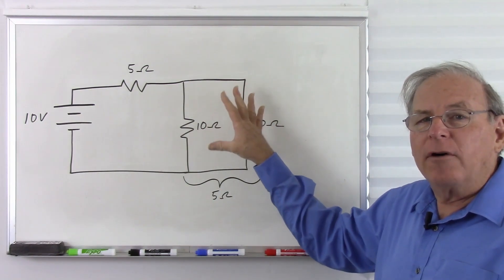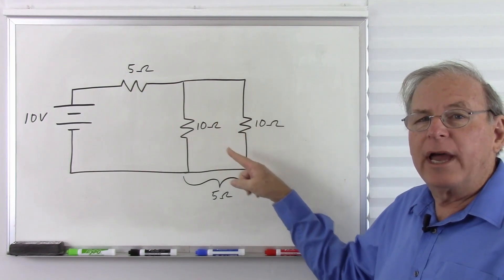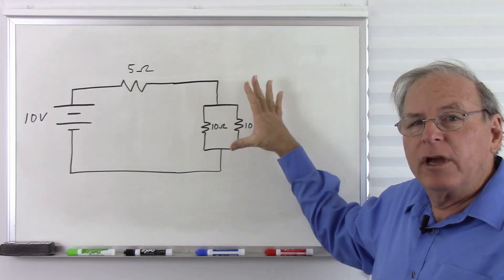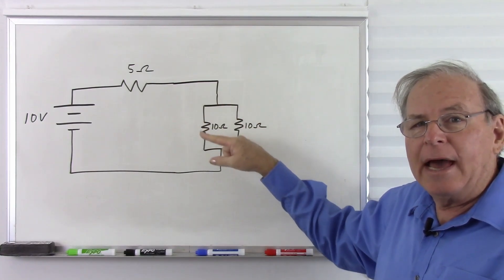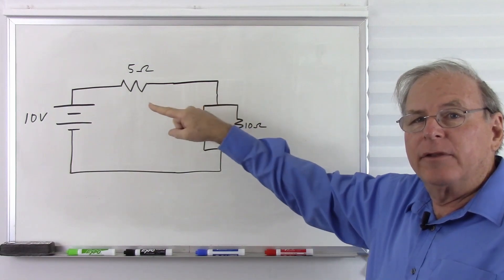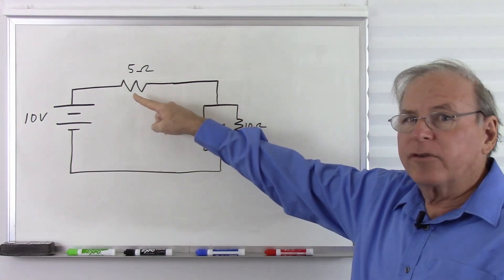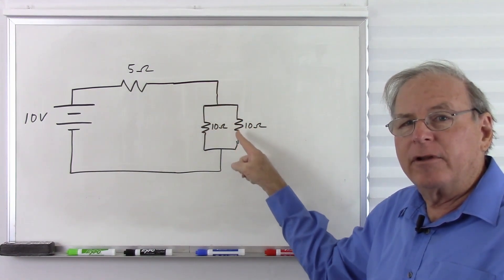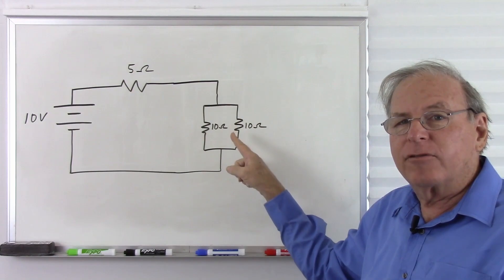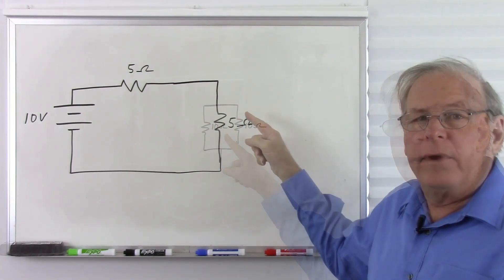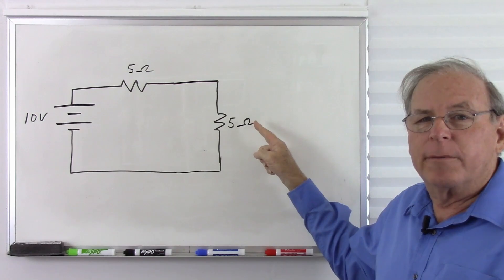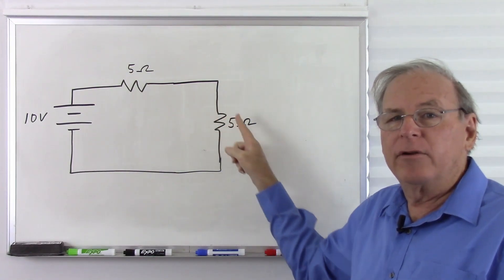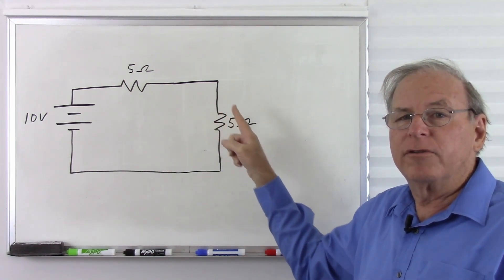To help us look at how these interact, let's change the way the circuit is drawn. Zooming out, we can see that the two 10 ohm resistors act together in the circuit, kind of in series with the 5 ohm resistor. Zooming out even further, the two 10 ohm resistors from a distance look like a single 5 ohm resistor.